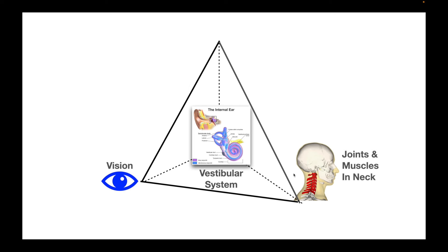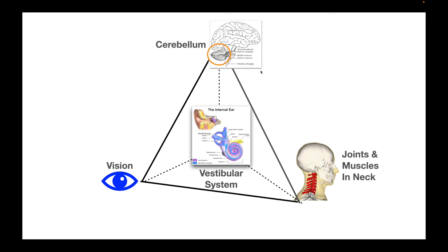At the top of this pyramid is the thing we're talking about today — the cerebellum. The cerebellum makes everything smooth, accurate, and coordinated, and that means all of this stuff at the base too. Basically what it does is act as a calibrator. If we think of this as being normal, let's say all three corners are contributing equally to the balance stability pyramid — 33 and a third percent each.